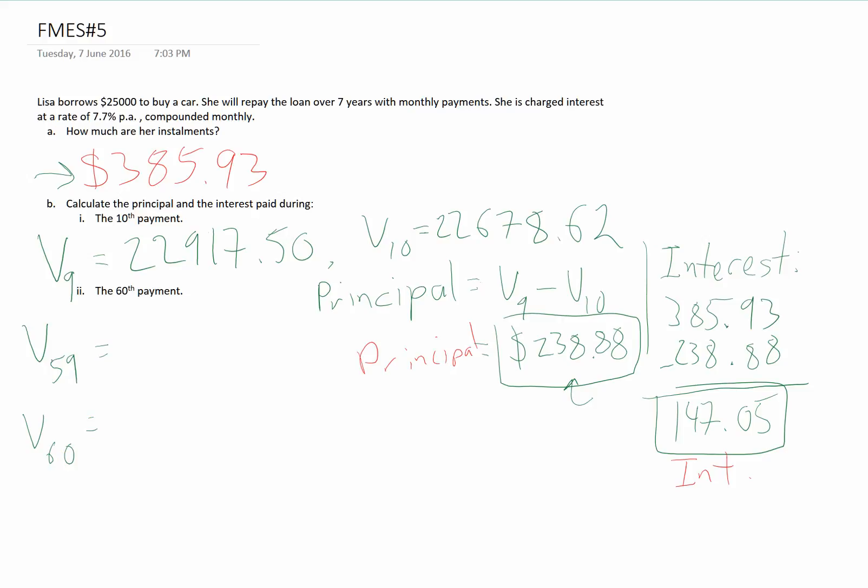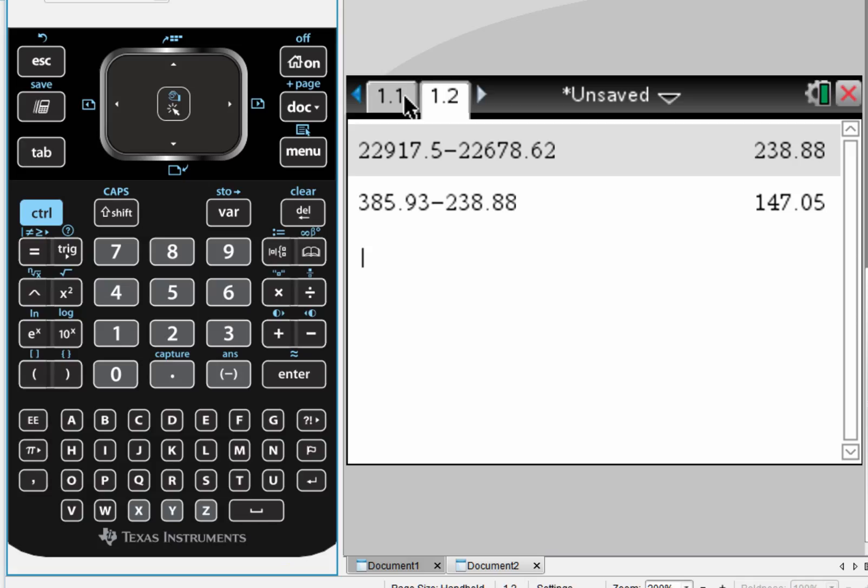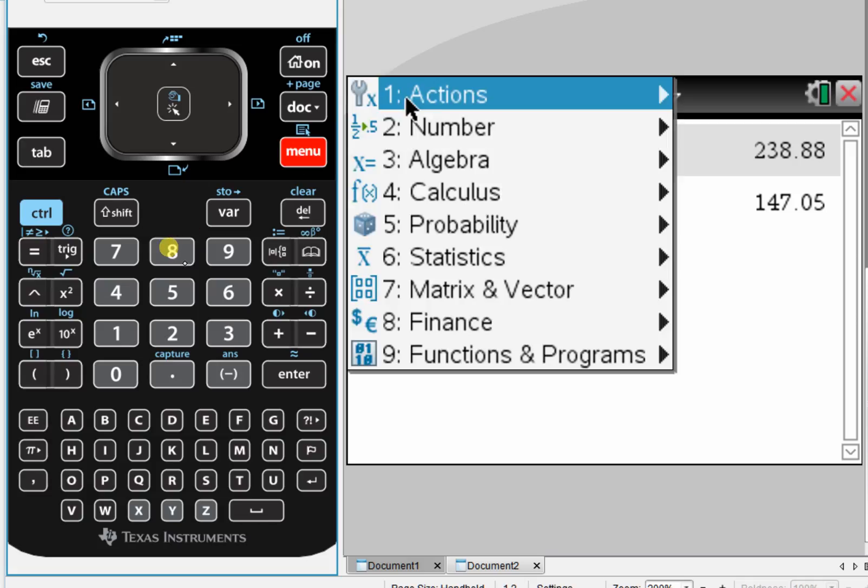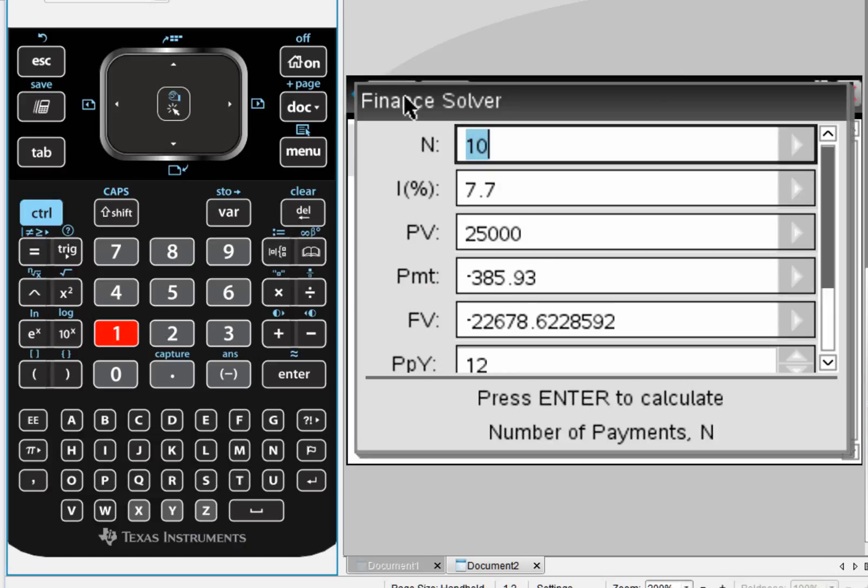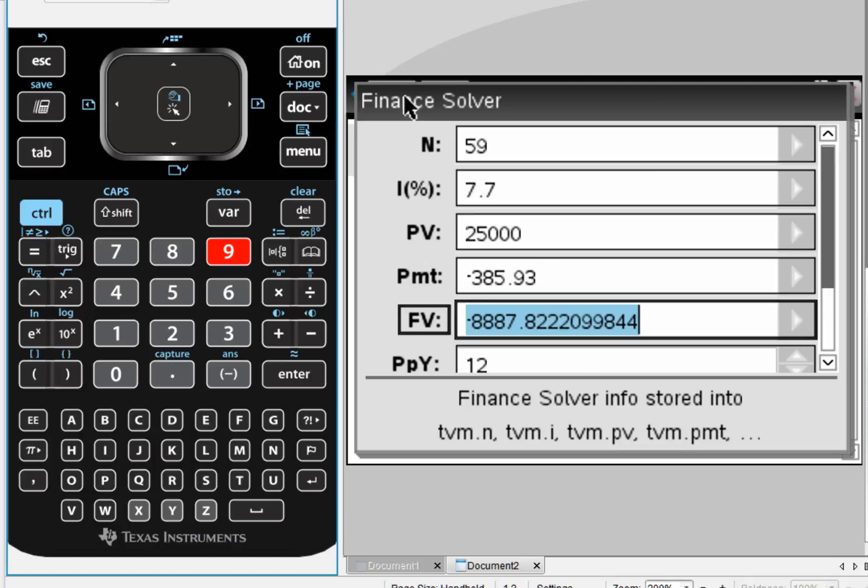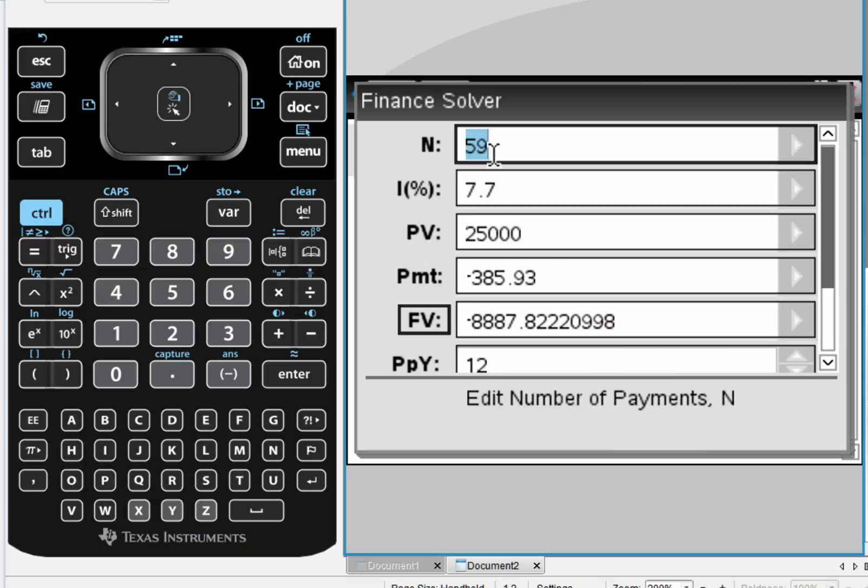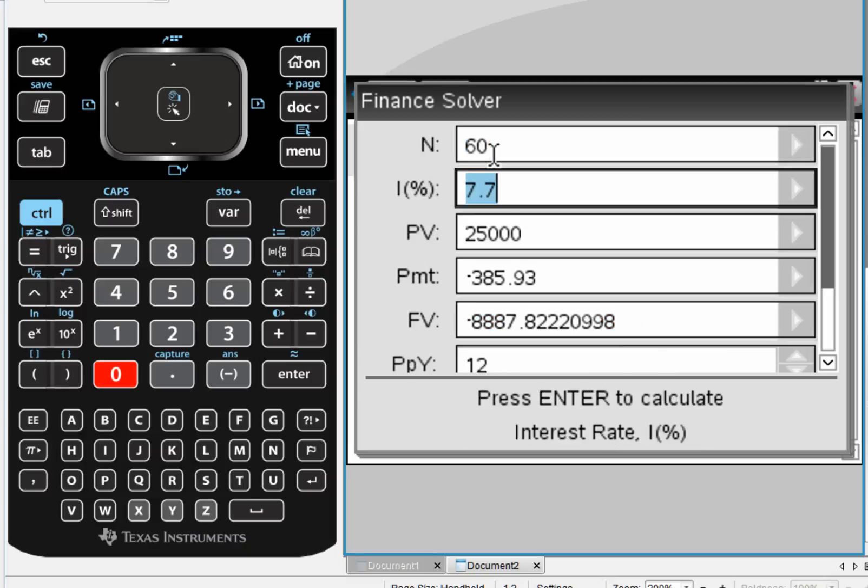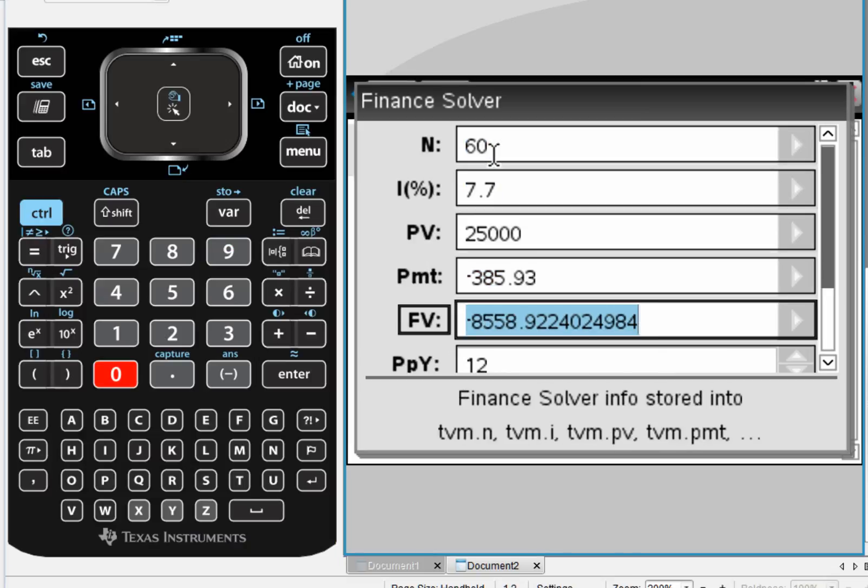We can use our CAS to find both of those. So if we go back to our finance solver, after 59 payments, she owes $8,887.82, and after 60 payments, she owes $8,558.92.